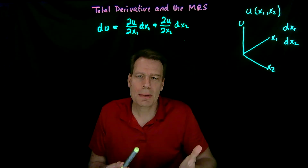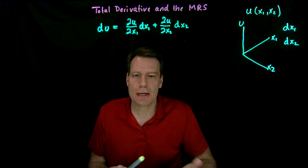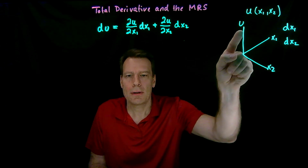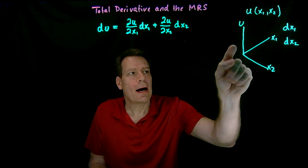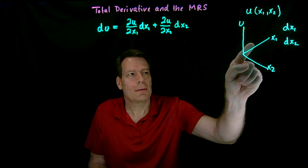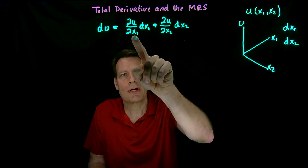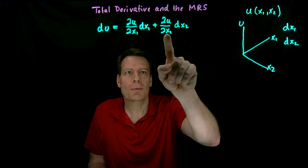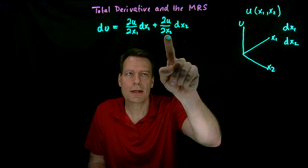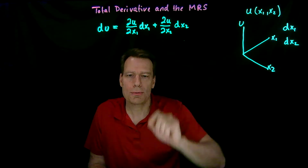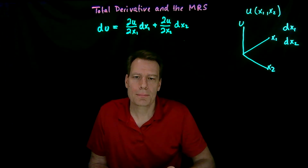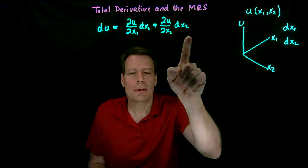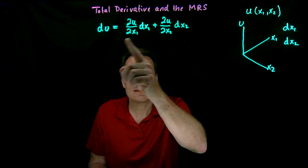That should make a certain amount of intuitive sense. If you want to figure out how much u changed, you have to figure out how quickly u changes when we change x1 and how much x1 changed, and how quickly u changes when we change x2 and how much x2 changes. So without formally deriving why this formula looks that way, we can already see it intuitively.